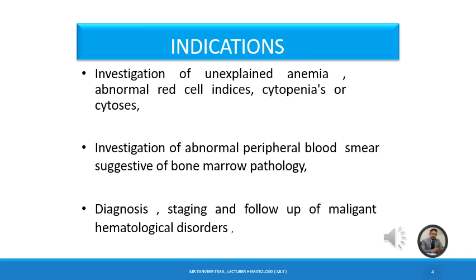The third indication is diagnosis, staging, and follow-up of malignant hematological disorders, which is very important. In leukemias, we use FAB or WHO classification for staging. On peripheral smear, we are sometimes unable to diagnose the sub-type or exact type of leukemia, so we proceed with aspiration. We can then obtain sufficient material for flow cytometry, cytochemistry, and enzymatic staining to determine the FAB classification — types M0 through M8 — making bone marrow compulsory in some leukemias.